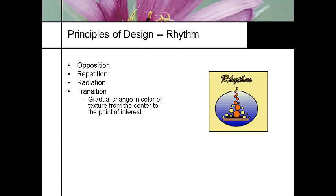Transition is another type of rhythm, where we look to transition in a more gradual manner. We can use color to transition, we can use shades to transition, we can use textures to transition. So we use transition to bring in that gradual change and to bring our focal point to our center of interest.